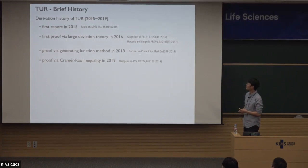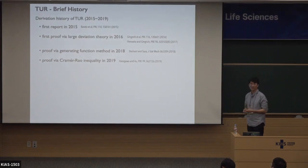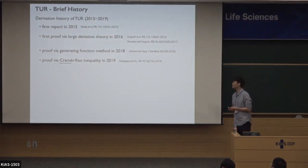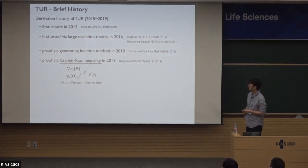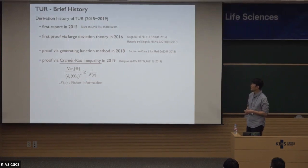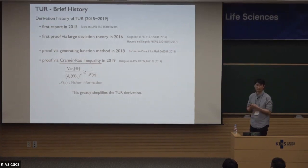In 2018, a Japanese group derived TUR using the generating function method. In 2019, another group derived TUR using the Cramér-Rao inequality. The Cramér-Rao inequality is a famous inequality in information science. It looks like this: I here means Fisher information, and this is a variance. The Cramér-Rao inequality greatly simplifies the TUR derivation, so I will skip the other derivations and focus only on the Cramér-Rao approach.